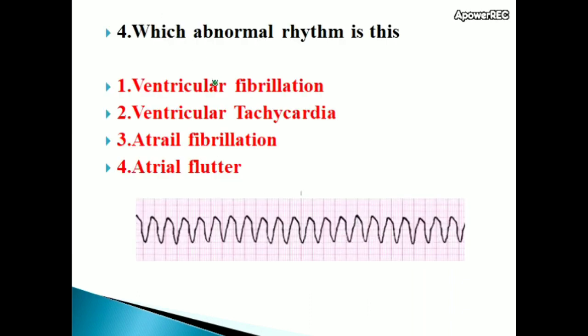Next question: which abnormal rhythm is this? Options: ventricular fibrillation, ventricular tachycardia, atrial fibrillation, atrial flutter. Correct answer is ventricular tachycardia. Ventricular tachycardia is a fast abnormal heart rate that can cause your heart to stop. Defibrillation is the immediate management of ventricular tachycardia. IV lidocaine and amiodarone are the immediate treatment of choice. Amiodarone is an anti-arrhythmic drug.